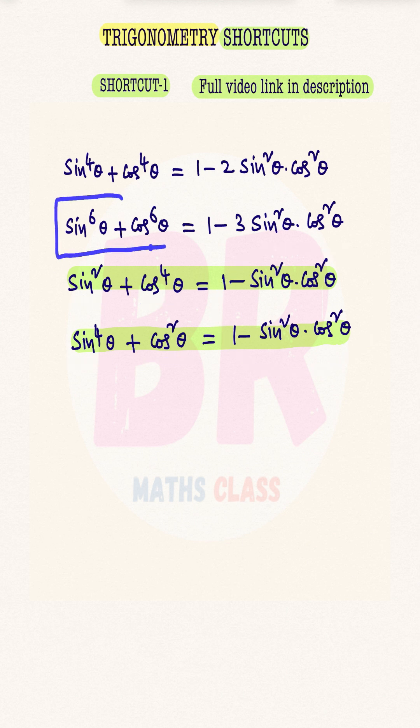When sin⁶θ + cos⁶θ is there, we just write 3 here: 1 - 3sin²θ·cos²θ. This is also similar like that, but here we will write 2. I hope you understand this trick.